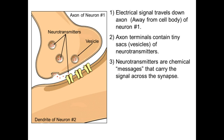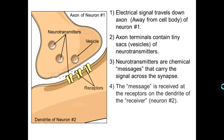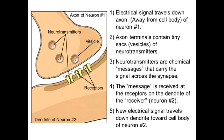These little neurotransmitters, or chemical messages symbolized here by little red dots, carry the message across the synapse. Some of these connect to a receptor molecule — it looks like a tooth here — on the dendrite of neuron number two. Once that neurotransmitter connects into that receptor, it fits like a lock and a key, and that causes an electrical charge to be released in the dendrite of neuron number two.